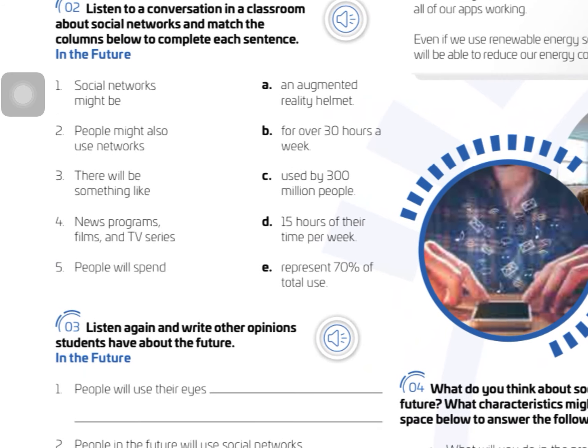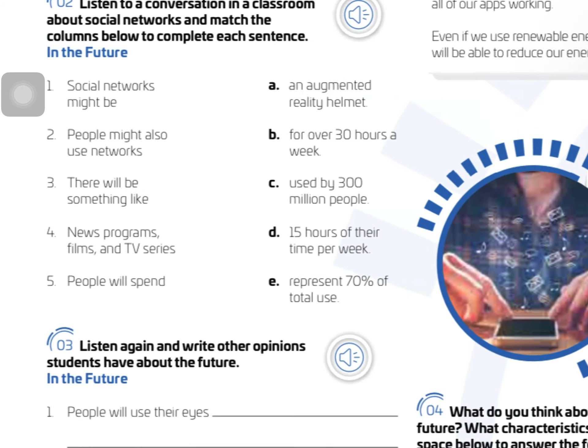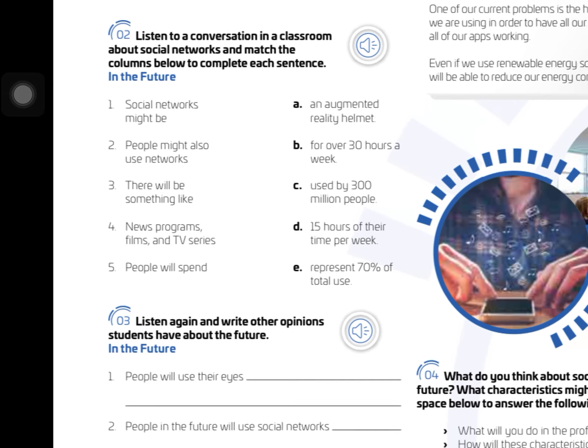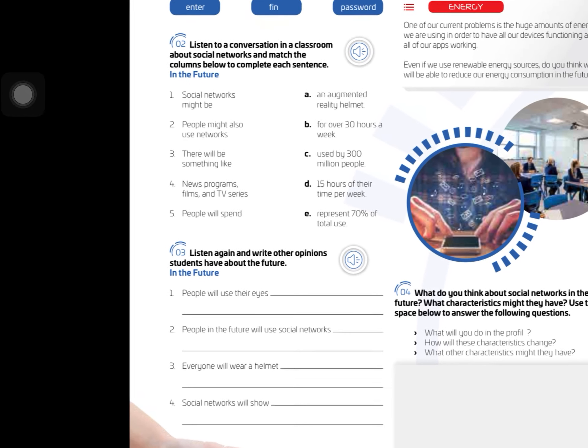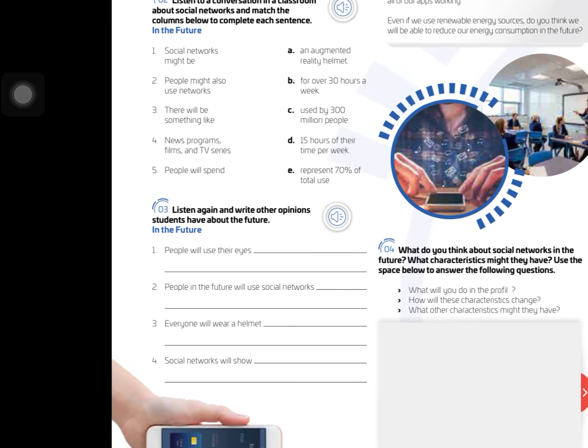In the future. You have 5 numbers, and then you have to match these numbers with the letters on the right. That's all you have to do in exercise 2.